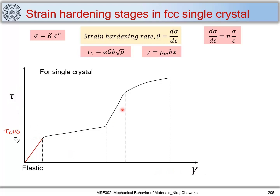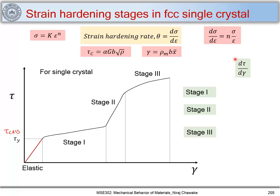For a single crystal, recalling Schmid's law, in the elastic regime we have tau_CRSS. When we enter the plastic regime and increase plastic strain, the flow stress tau varies for a single crystal FCC material. Typically, the variation of tau with respect to gamma shows three regions which we can clearly mark in plastic deformation — stage one, stage two, and stage three.